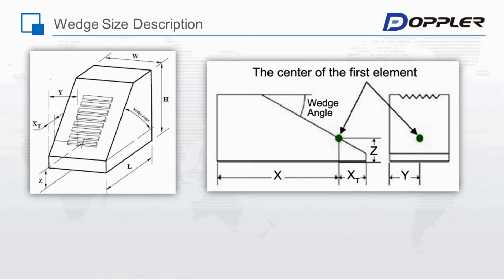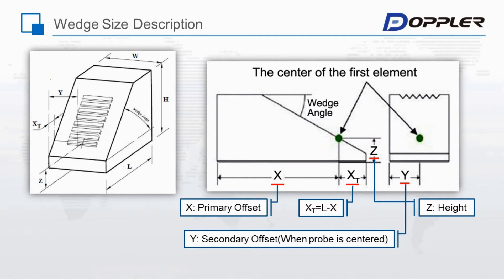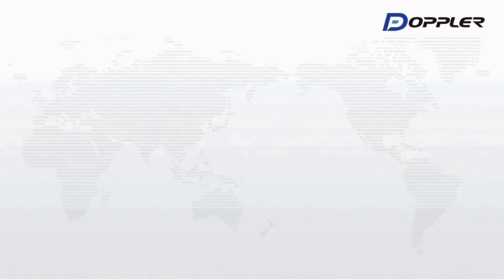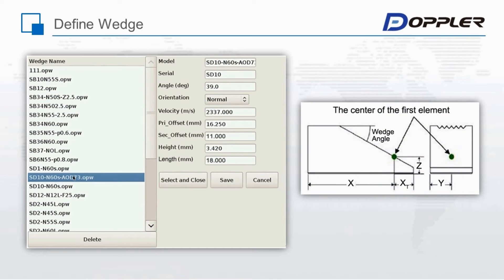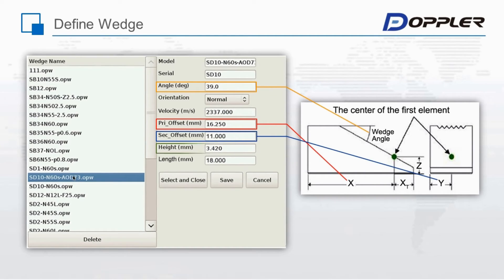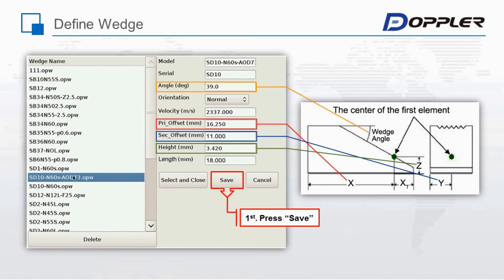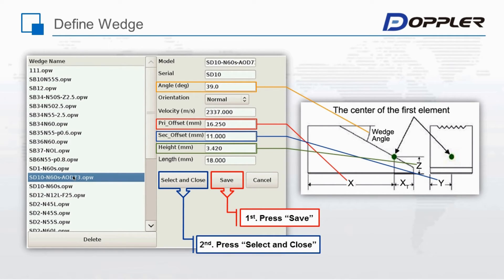These two figures show the meaning of every parameter. Coming up: how to define wedges. This dialog box will be found under the wedge selection menu. Please input the parameters accordingly. We strongly suggest users follow the model name in the specification paper to avoid confusion. Save and then close.